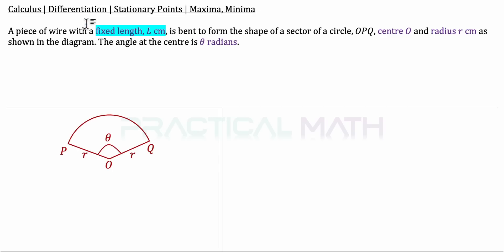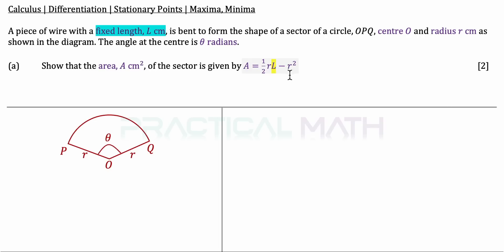The question goes: a piece of wire with fixed length L cm is bent to form the shape of a sector OPQ with centre O, radius R cm as shown in the diagram. The angle at the centre is theta radians. In part A, show that the area A cm² of the sector is given by A equals half R L minus R squared, and that is a two-mark question.